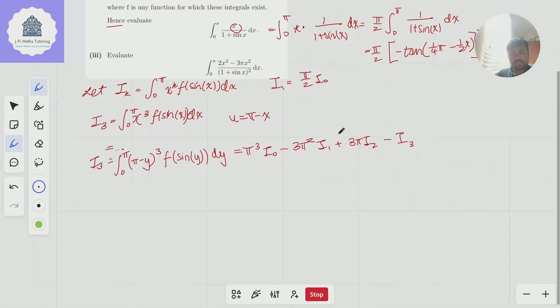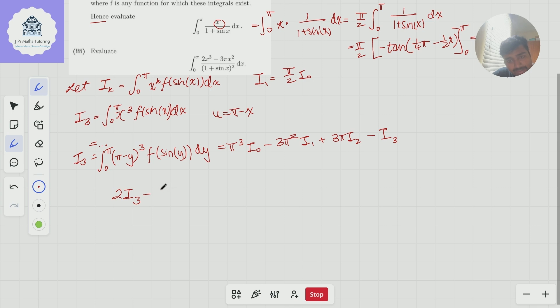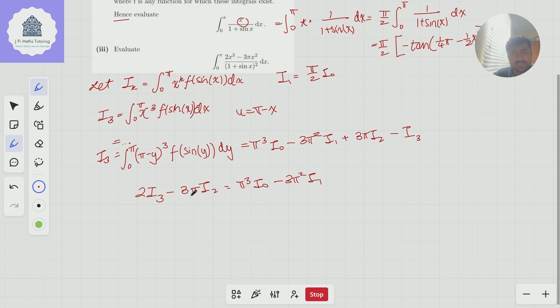And now the beauty of this is if I bring the i₃ to the left-hand side and the i₂, I get 2i₃ minus 3πi₂ is equal to π cubed i₀ minus 3π squared i₁. Why is this useful at all? Well, if you notice here, they've given us 2 times x cubed minus 3π times x squared, which very conveniently matches up with what we have here.